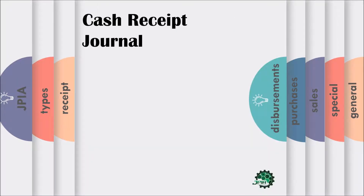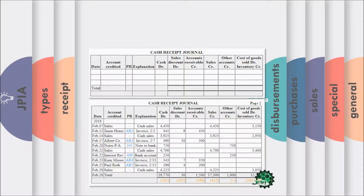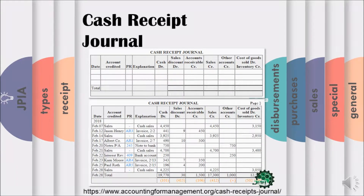For the cash receipts journal, keep in mind that all cash inflow of the company are recorded in this journal. A separate journal is used to record the cash collections. In this slide, you'll see an example of a cash receipts journal and how each cash receipts transaction is recorded.